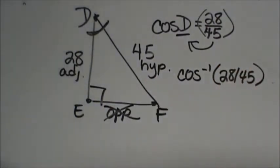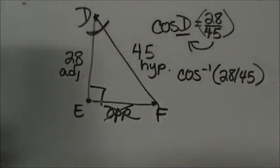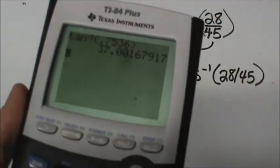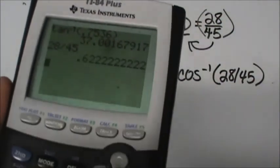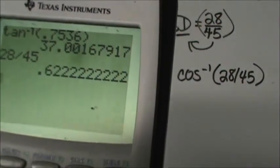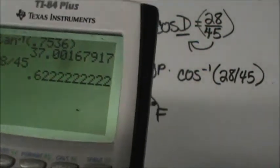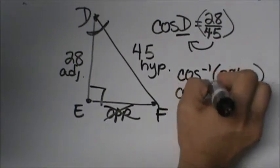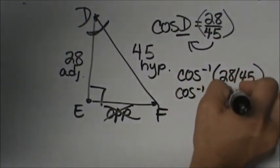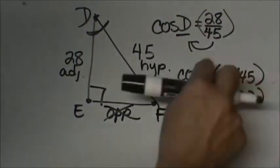Or if you like the decimals you can go into your calculator and do 28 divided by 45 and get that decimal so you can also take the inverse of 0.6222 repeating. It's really up to you.